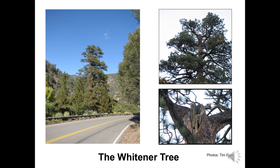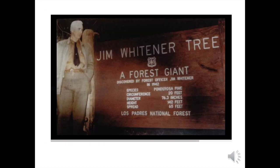This 400-plus-year-old tree, a Ponderosa Pine or Jeffrey Pine, is next to Milpotrero Highway. It was shaken so violently that the top of the tree broke off. You can see the break point 110 feet above the ground on the zoomed-in photos. Tree ring studies confirm the date of the break — 1857 — and show altered growth patterns for several years after the earthquake. The uniqueness of the Whitener Tree was discovered by forest ranger Jim Whitener in 1942. This 1959 photo shows Whitener next to a sign commemorating the discovery. There is no sign or commemoration marker next to the tree today.